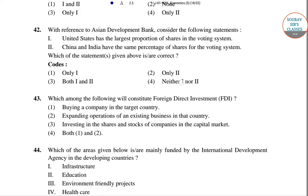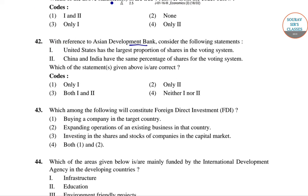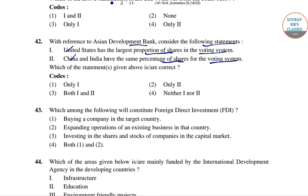Question 42: With reference to the Asian Development Bank — the United States does not have the largest proportion of shares in the voting system, and China and India do not have the same percentage of shares. Both statements are wrong, so neither of them is right.